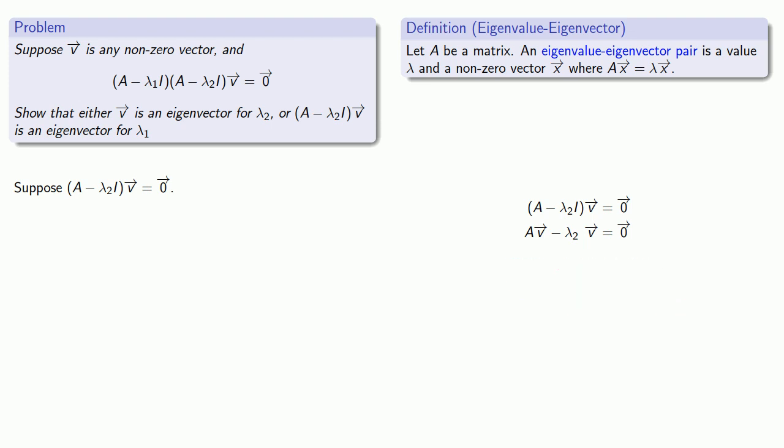And we can rearrange. And this is exactly our definition of what an eigenvector eigenvalue is. And so v is an eigenvector for λ2.